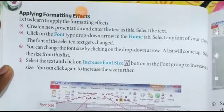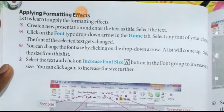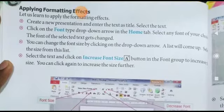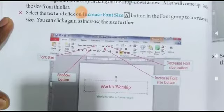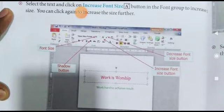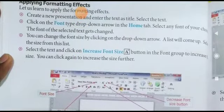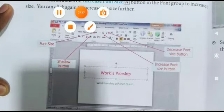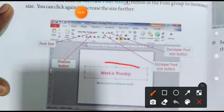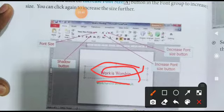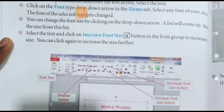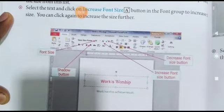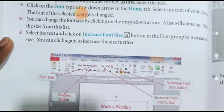Uske baad aate hain apply formatting effect. Isme formatting effect mein kya cheez aa rahi hai — create a new presentation and enter the text as title. Jaise hi aapne new presentation banaane ke liye click kiya aur file create ki, toh jab yeh khul jaayega, aapko title likhna padta hai ki aap kis cheez ka presentation bana rahe hain. Toh title likha 'Work is Worship'. Ab us text ko select karna hai.